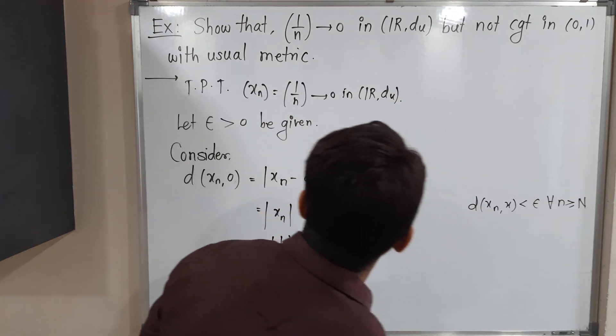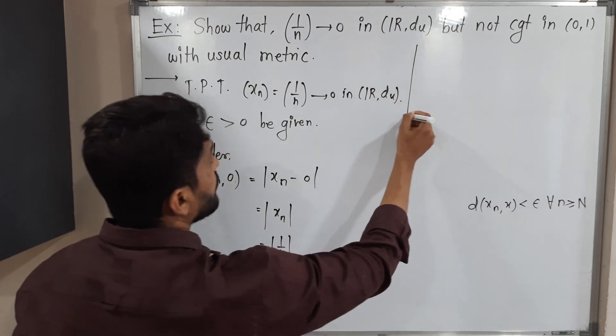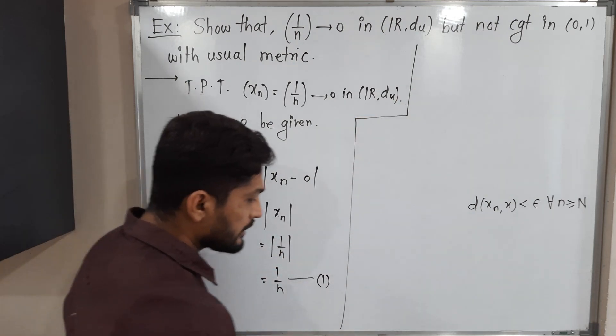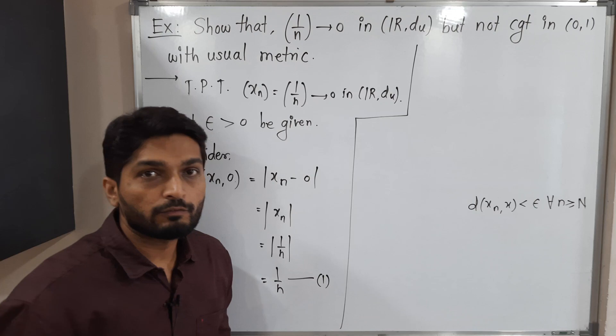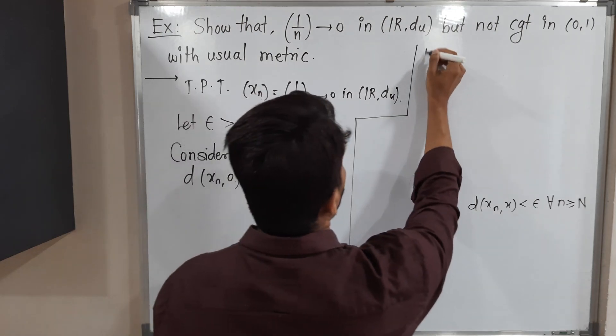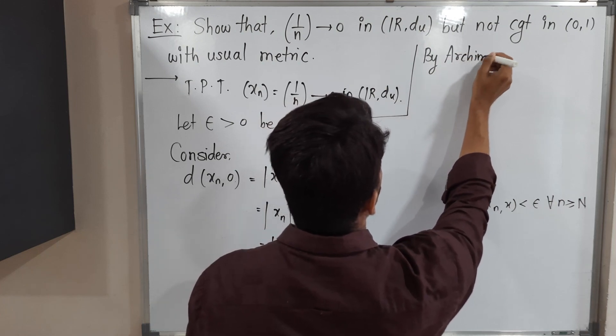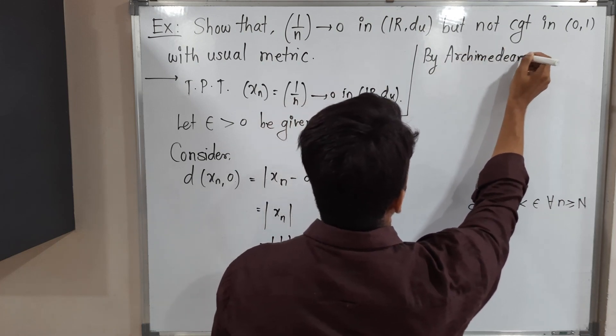During the selection of capital N, we use Archimedean property. Let me write, by Archimedean property. See, this property says...